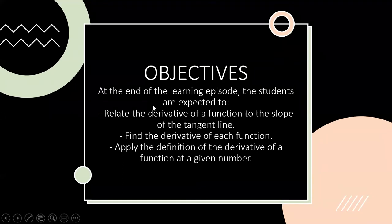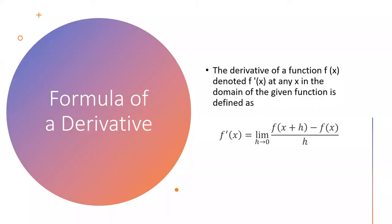So now we're going to mention and discuss the definition and the formula of the derivative. When we say the formula of the derivative, the derivative of a function f of x, denoted f prime of x, at any x in the domain of the given function is defined as: f prime of x is equal to the limit as h approaches 0 of f of x plus h minus f of x over h. This is the formula of the derivative.